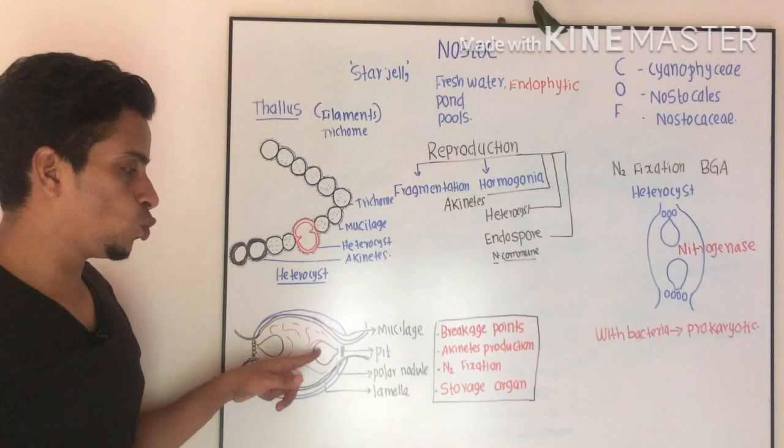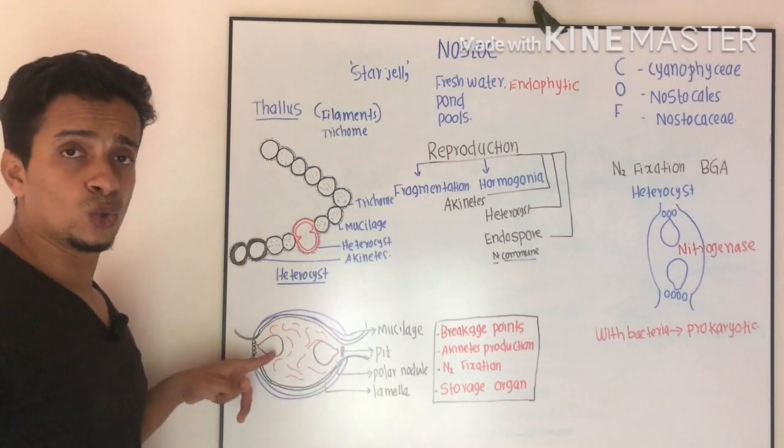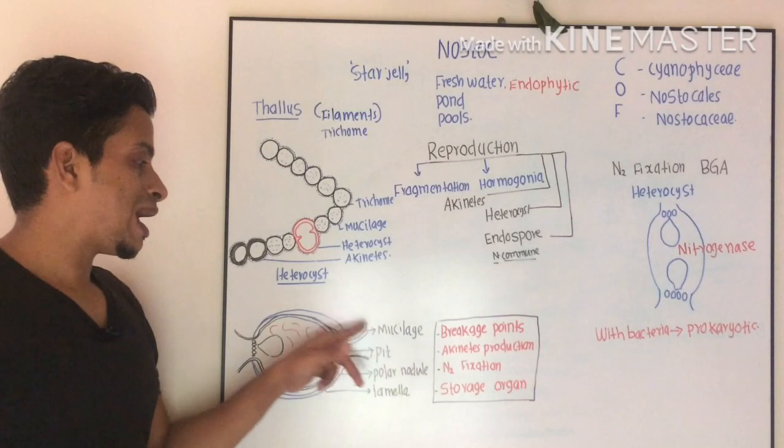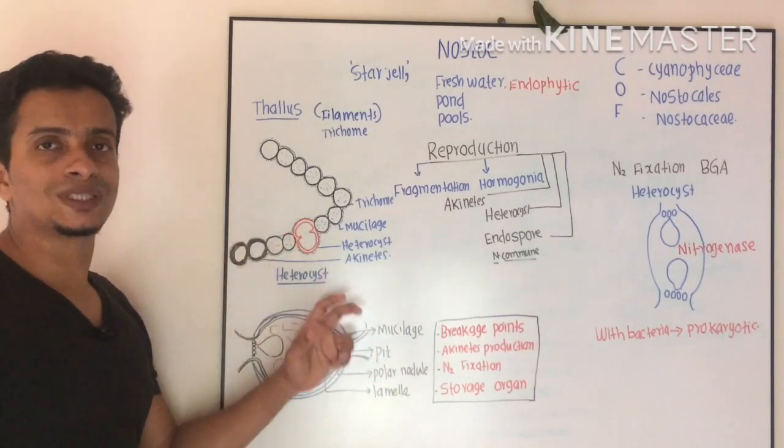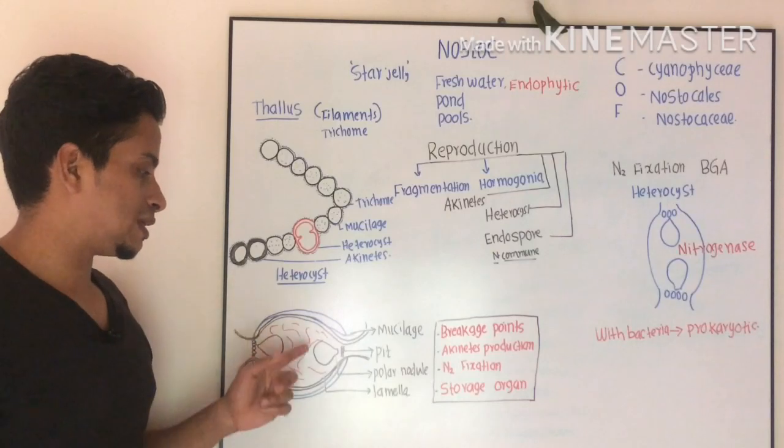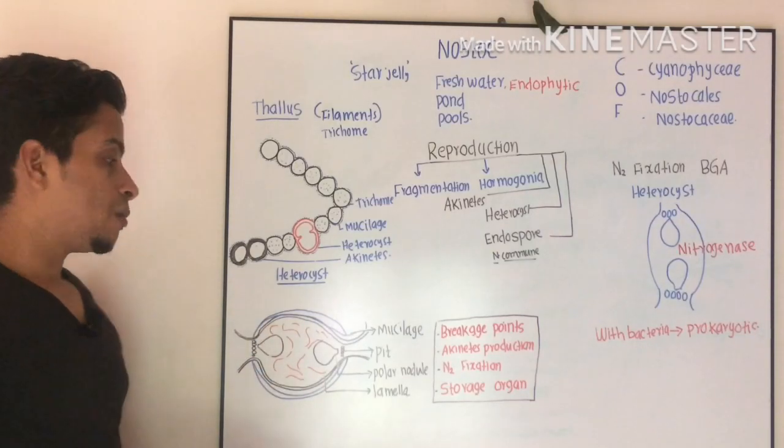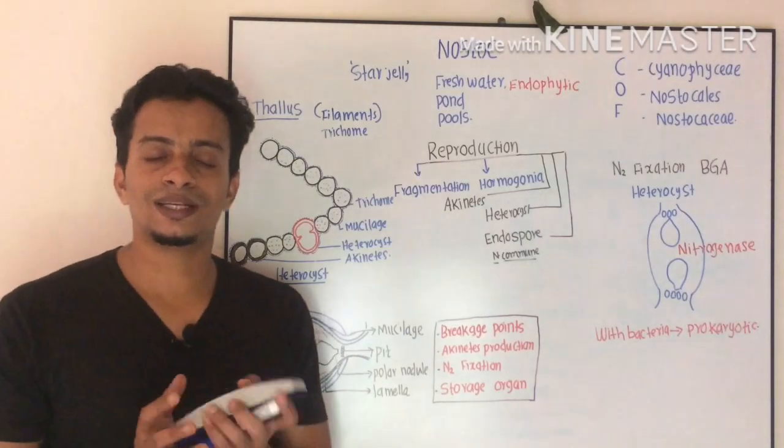Here you can see two nodules, known as polar nodules. You can also see prominent mucilaginous secretion around the cell and some photosynthetic lamellae.